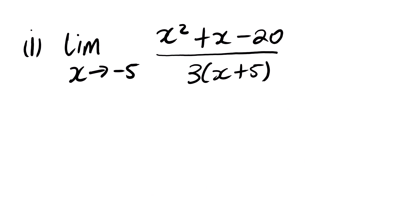The first question is: limit as x approaches negative 5, and then our function is x squared plus x minus 20, all over 3 into bracket x plus 5. Now, if we try direct substitution we will see that we are going to end up having a 0 over 0, so direct substitution is not applicable in this case.